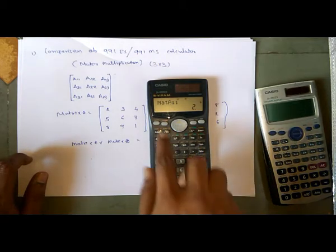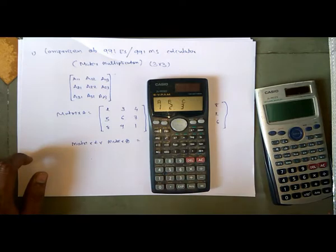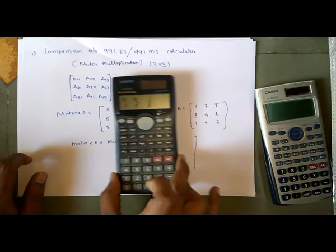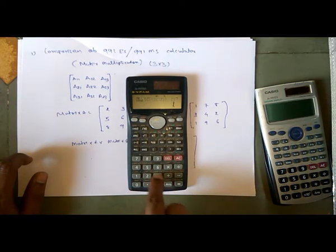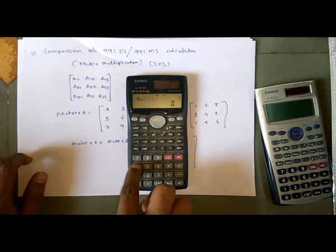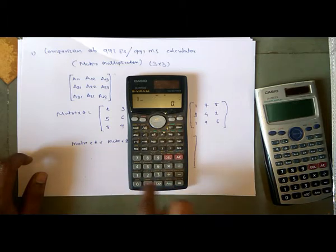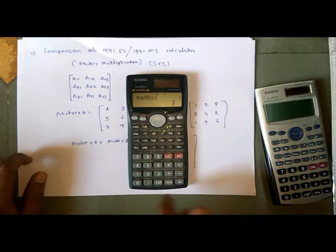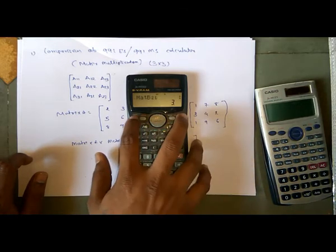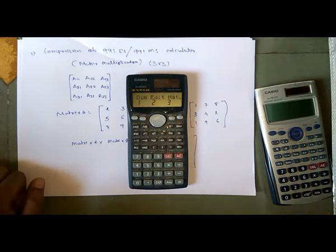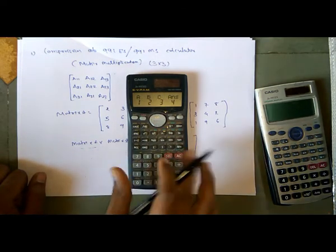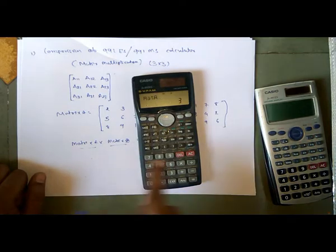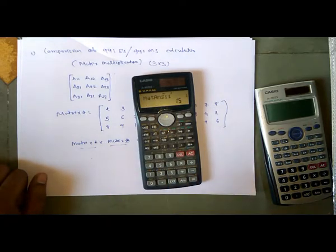Again press Shift Matrix and insert dimension. Now we have to insert data for matrix B. Select B, then enter 3 rows and 3 columns. B11 is 1, then 7, 8, 3, 4, 2, 1, 9, and 6. All data is finished. Now press Shift Matrix, insert 3, select matrix A, multiply by Shift Matrix, select matrix B, and press equals.